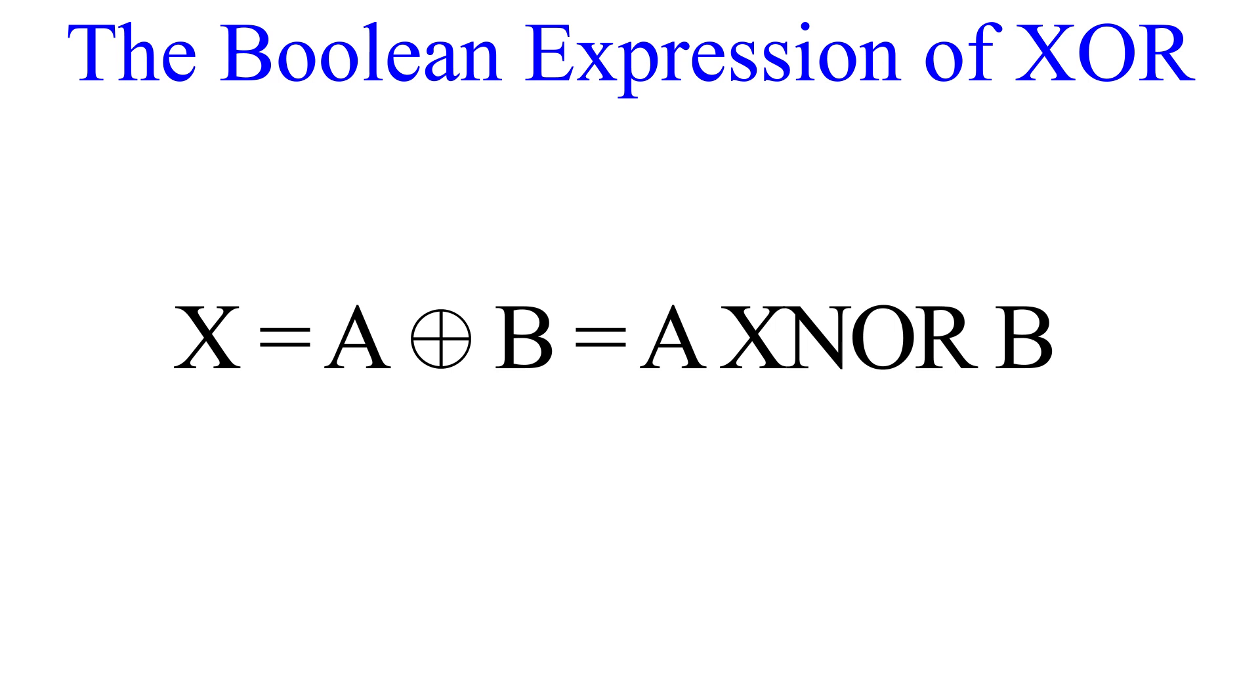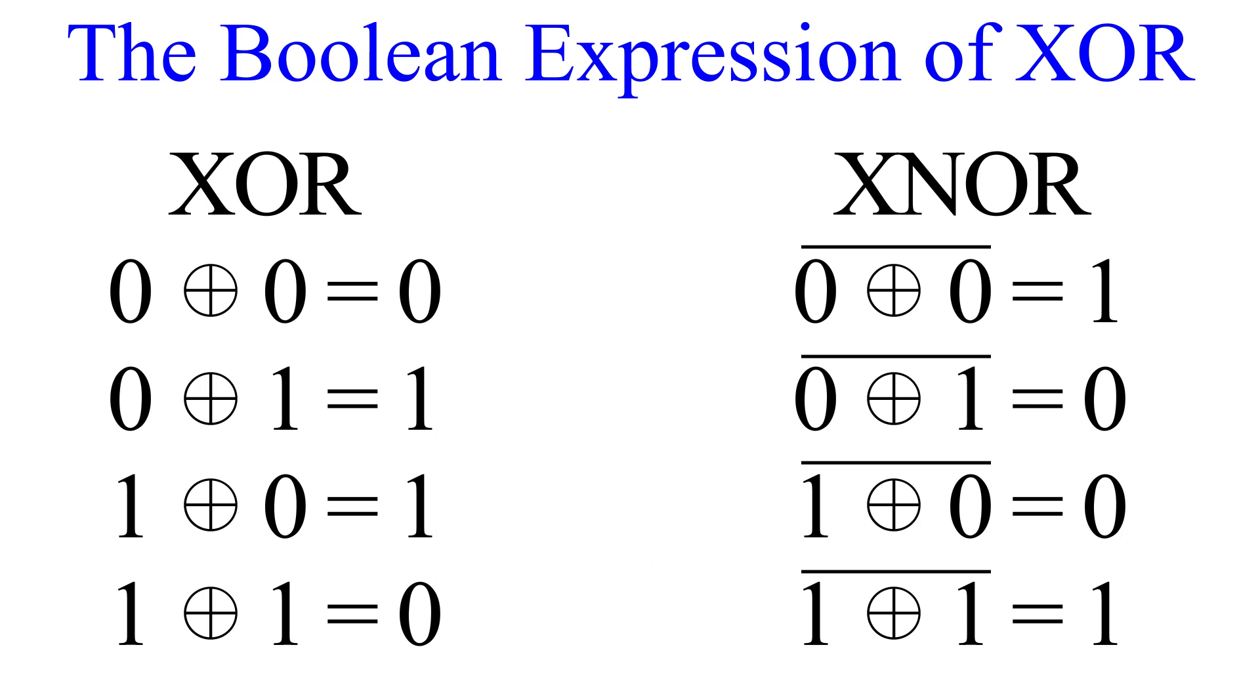For the XNOR Boolean expression, we're going to place a negation bar, or NOT bar, over the entire expression. This bar is going to indicate that we need to invert the XOR logic, which of course gives us an XNOR output.